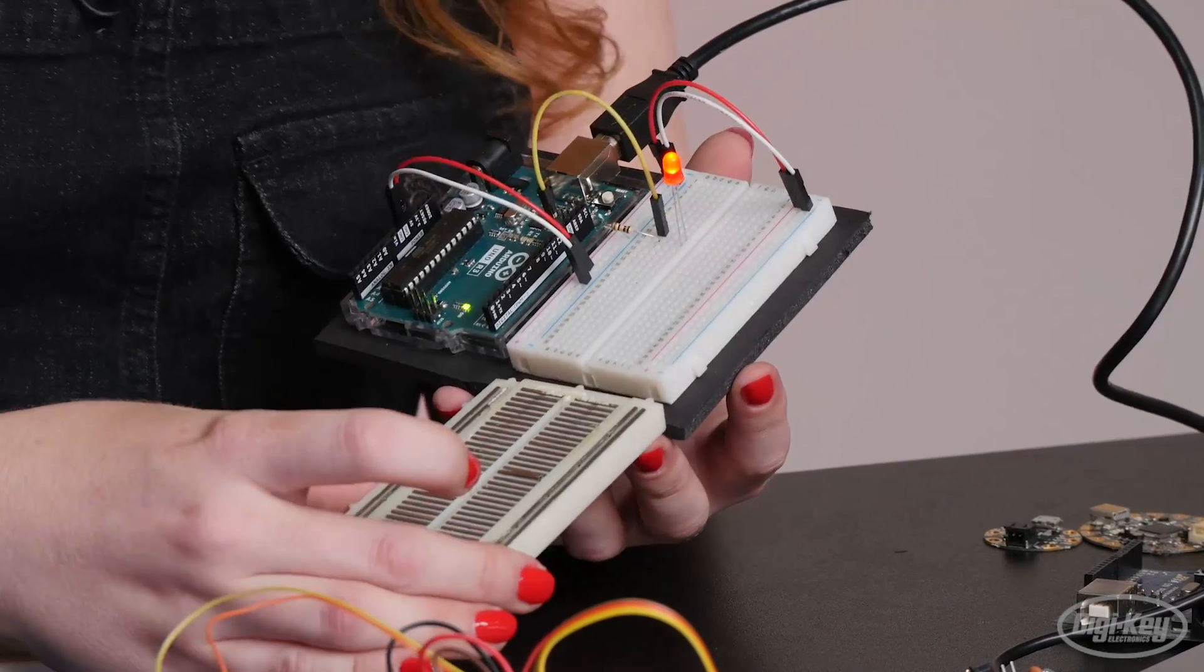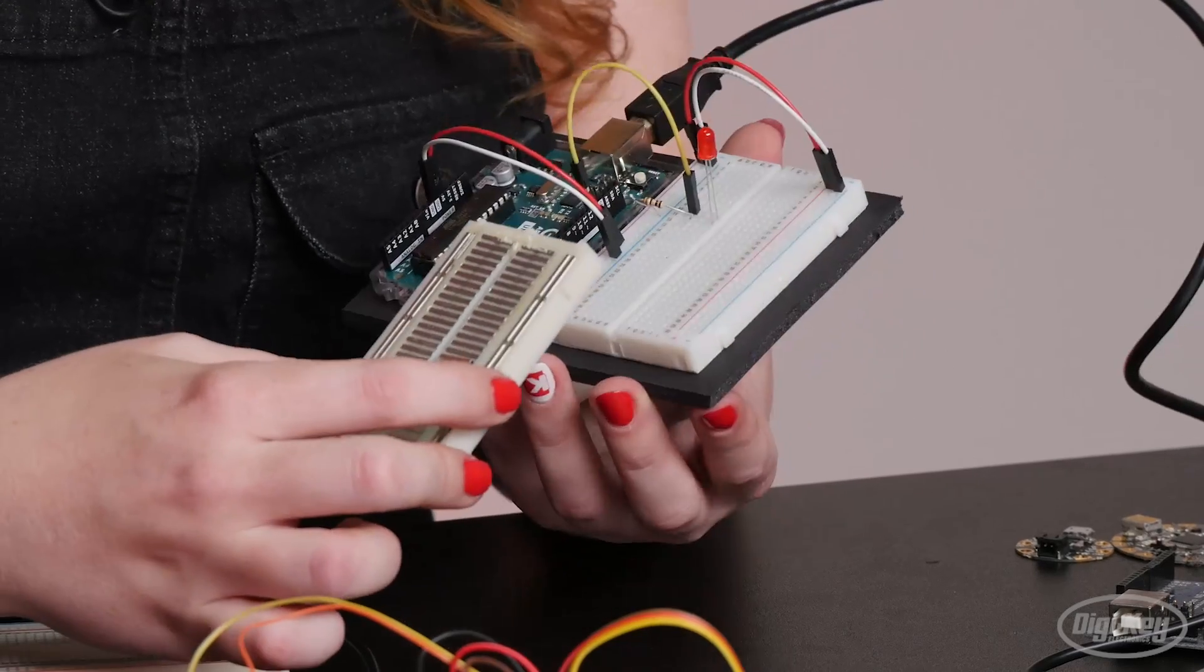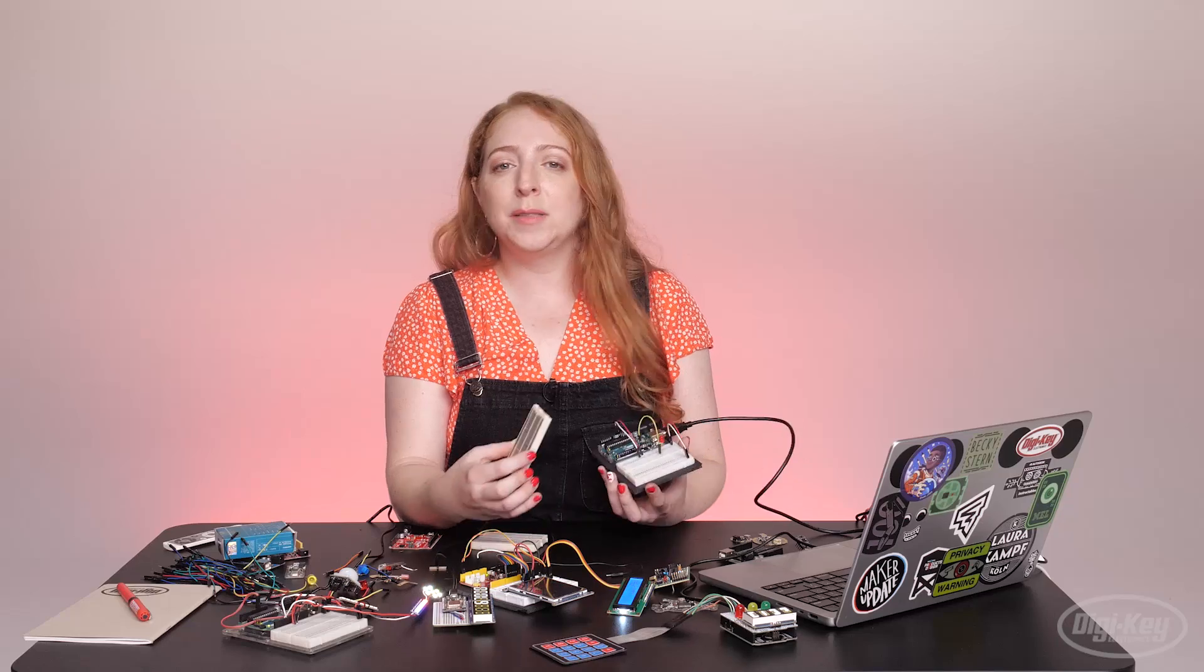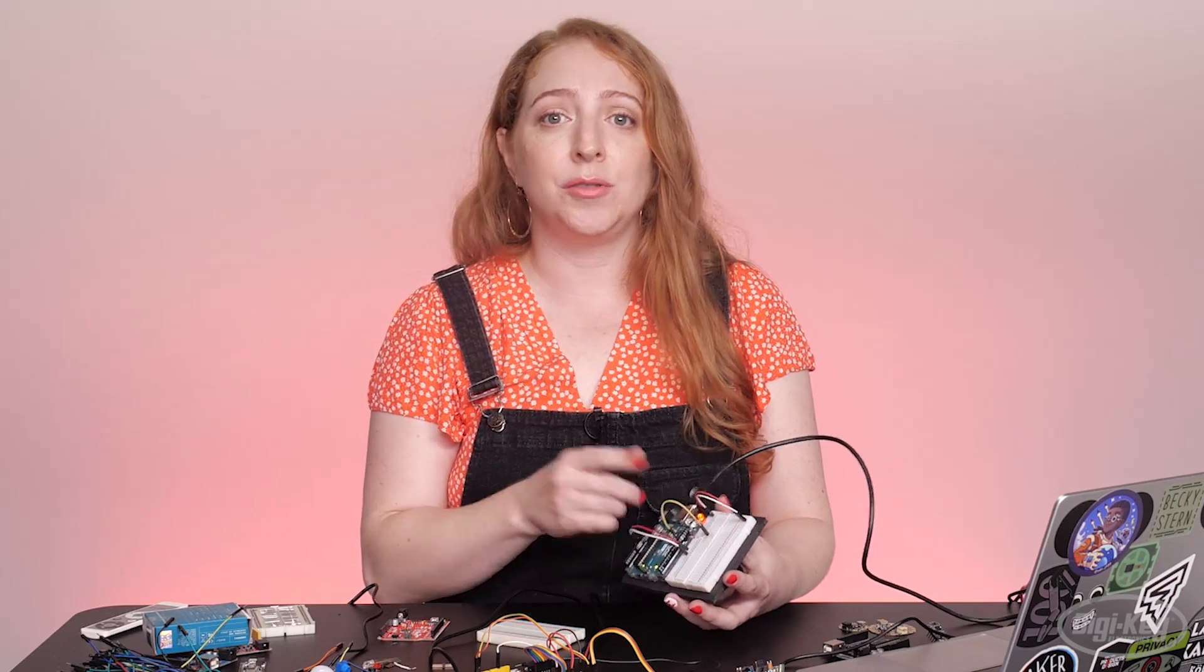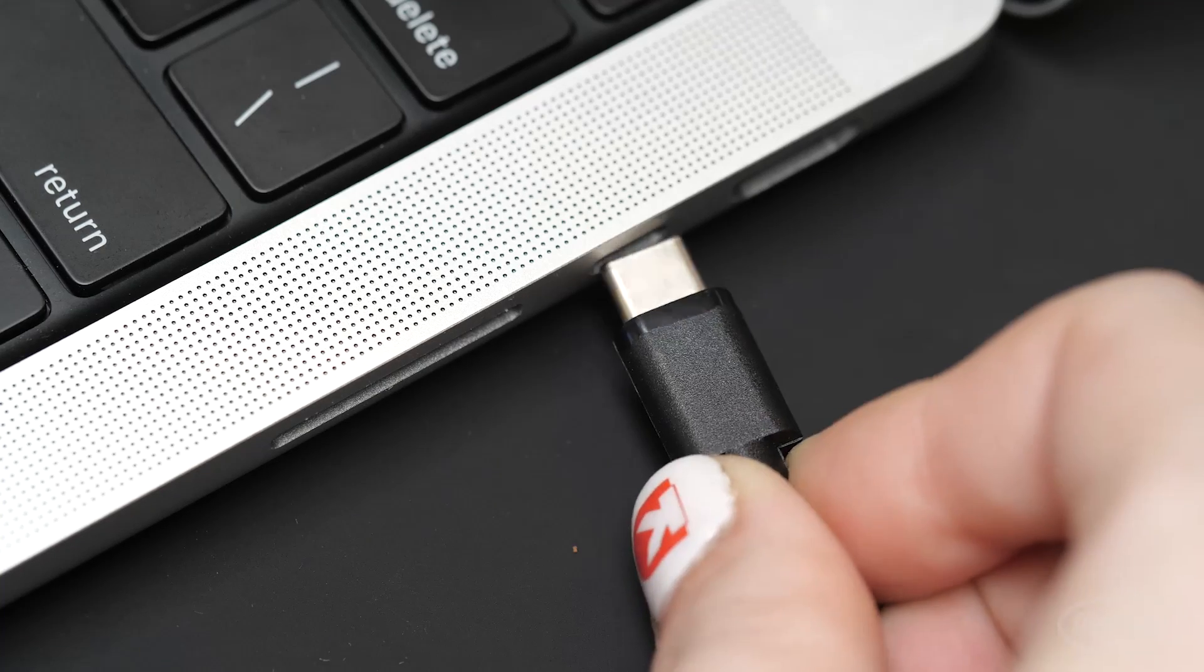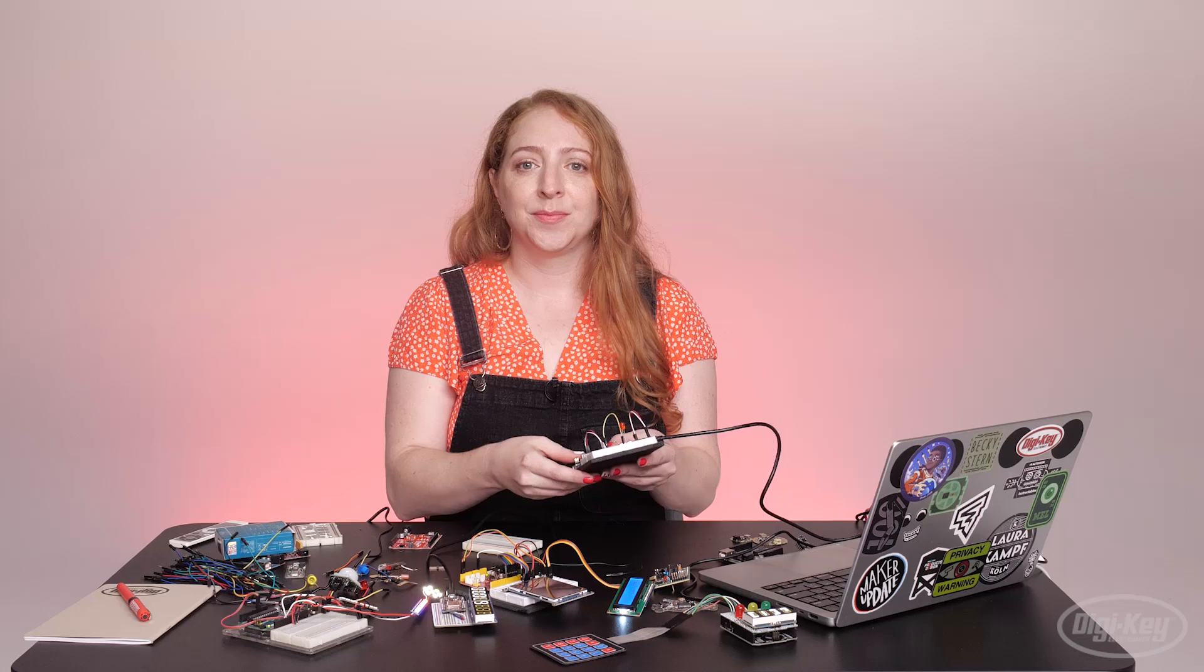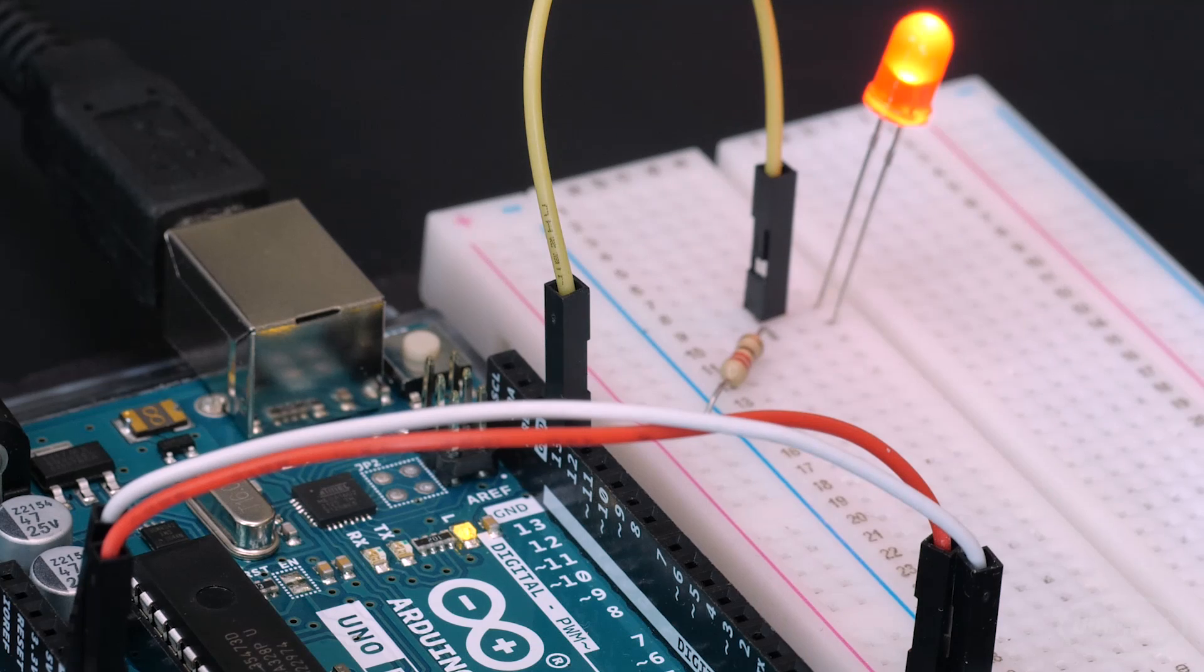For our circuit, it's not strictly necessary to use the ground bus as an intermediary connection to the board's ground, but it's best practice to connect your bus bars whenever you're prototyping. Once you've built the circuit, which you should always do with the power disconnected, you can go ahead and plug your board into the computer. Your new LED should blink in time with the tiny surface mount LED on the board.